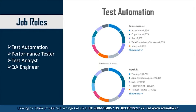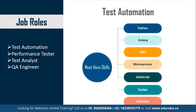The top skills required to become a test automation engineer include knowledge of testing, agile methodologies, SQL, test planning, and manual testing. Apart from these, you need to be well acquainted with programming languages like Python, Golang, and JavaScript. You also need to be well versed with AWS, microservices, Docker, and Selenium. These skills will help you move to a higher position as a test automation engineer and also aid your appraisal.